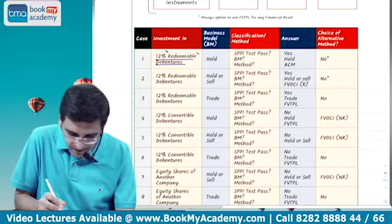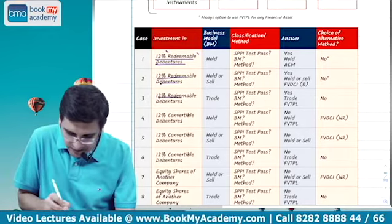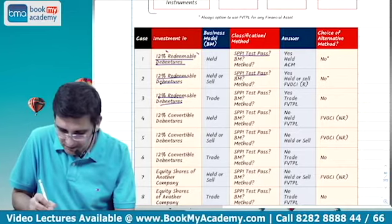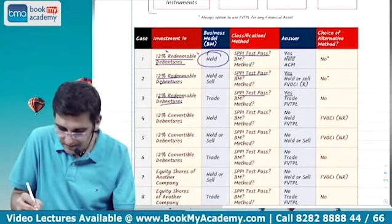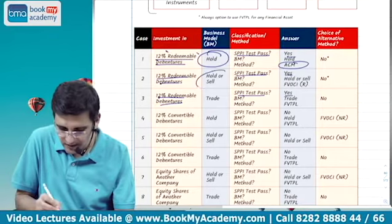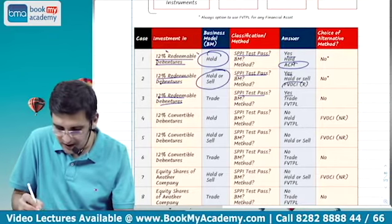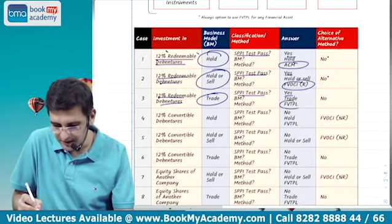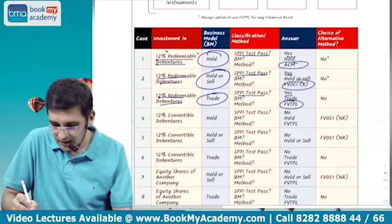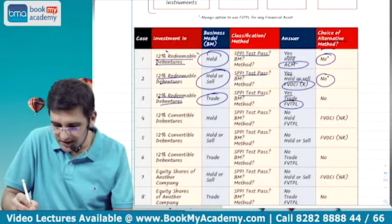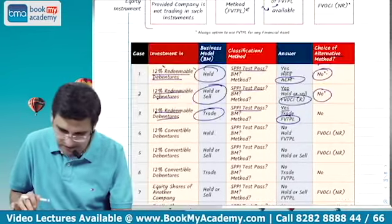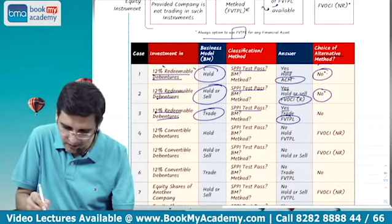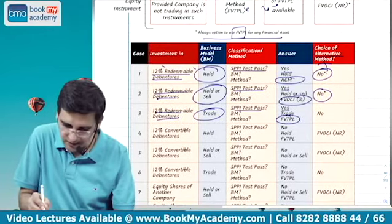So 12% debenture: SPPI test is yes in all cases. If business model is to hold, use ACM. If hold or sell, use FVTOCI R. If to trade, use FVTPL. You don't have an alternative choice of method, except there is a star: in every particular case the FVTPL option is available.